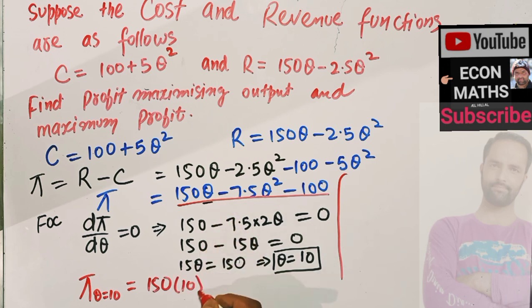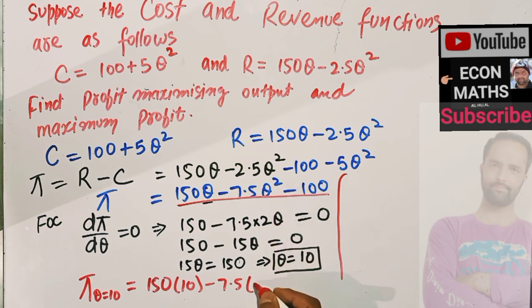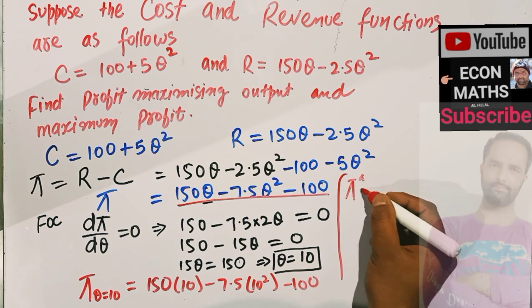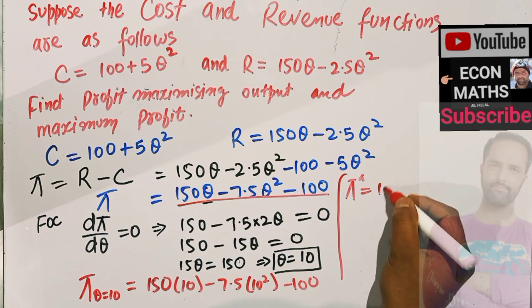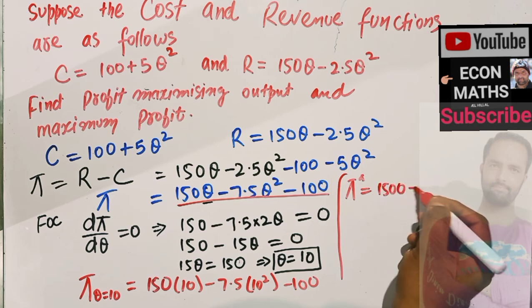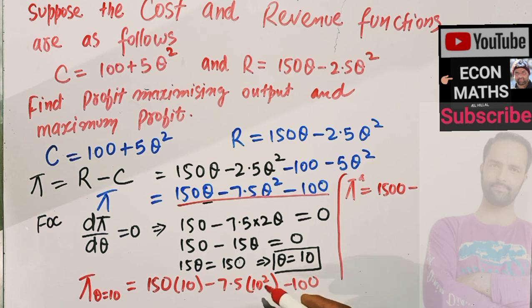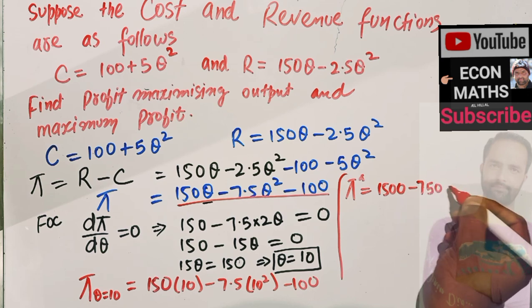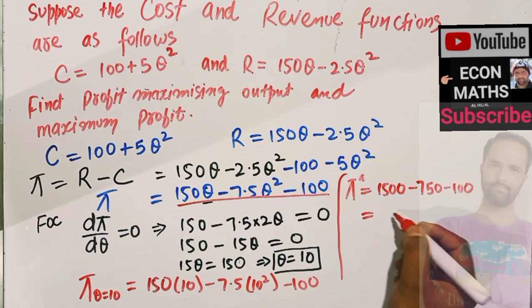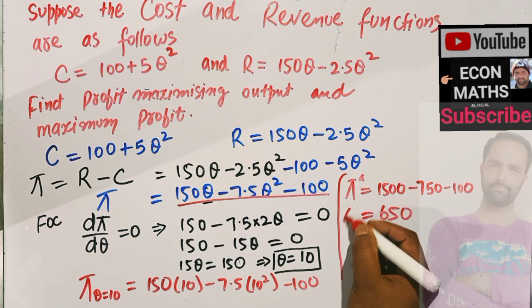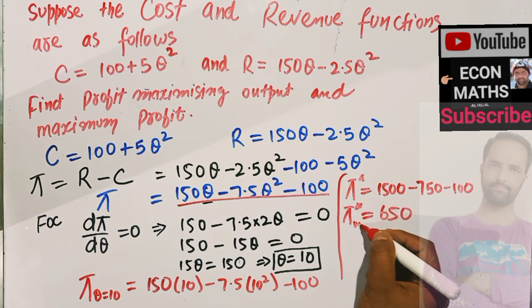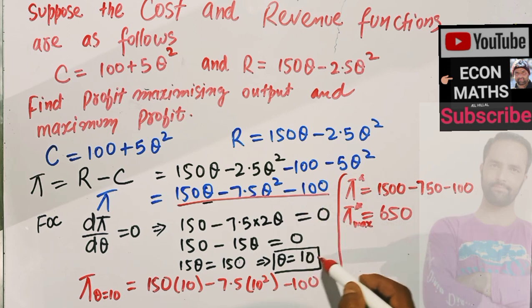We have minus 7.5 times q squared, that is 10 squared, minus 100. This gives us pi equal to 150 times 10, which is 1500, minus 7.5 times 100, which gives us 750, minus 100. Solving this we get 650 as the maximum profit. So we got both answers: profit maximizing output is 10 and maximum profit is 650.